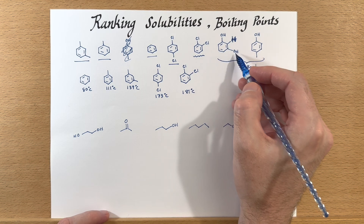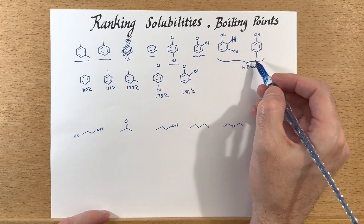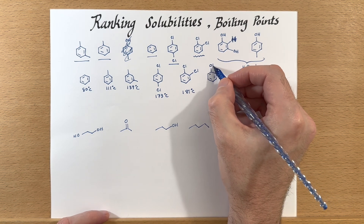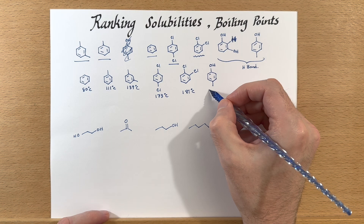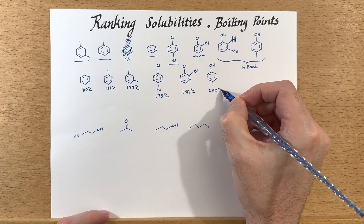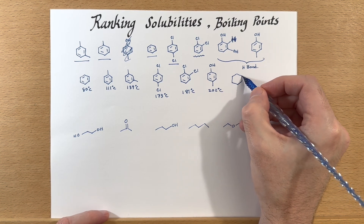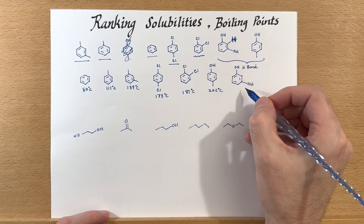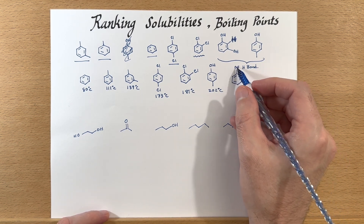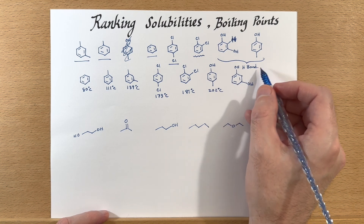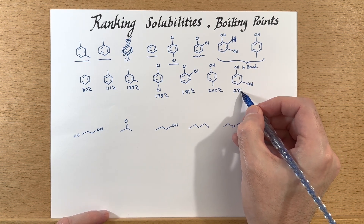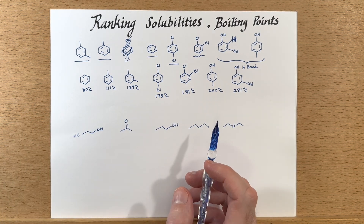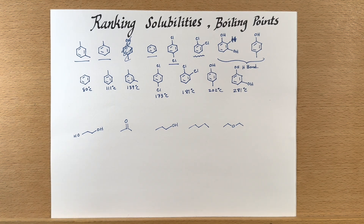This molecule has one OH hydrogen bonding group, and this one has two. So this one is going to be the lower boiling point just from having one less hydrogen bonding group — 202 degrees. The one with two OH groups, both pulling in the same direction, is even more polar and we get up to 281 degrees C.